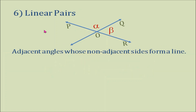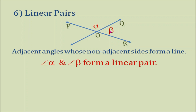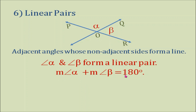Number 6: Linear pairs. They are adjacent angles whose non-adjacent sides form a line. So we have here two lines intersecting each other, with angle A and angle B forming a linear pair. This means the measure of angle A plus the measure of angle B equals 180 degrees.